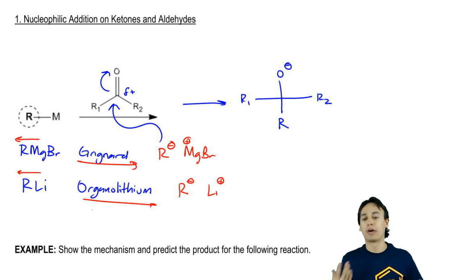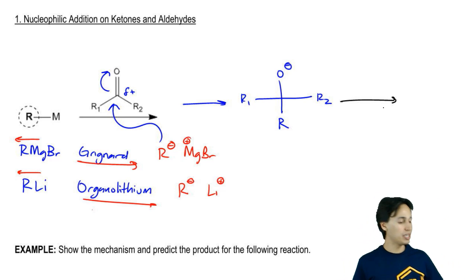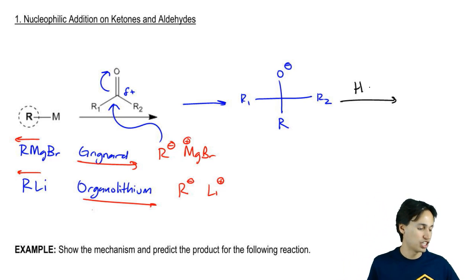That tetrahedral intermediate would normally stay there, but these are usually followed by a protonation step. I don't know exactly what the protonation step would be, but I'm just going to put some kind of H-A. Some kind of protonation would occur and you would get your substituted alcohol. So you get OH, R1, R2, and the R that we actually added.